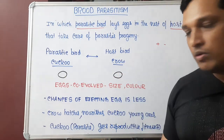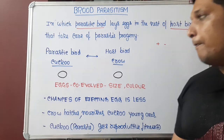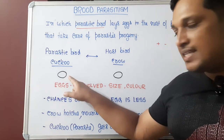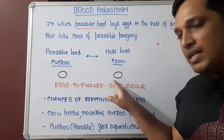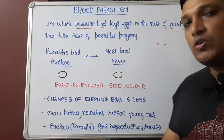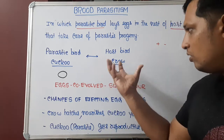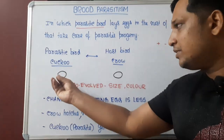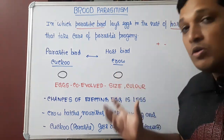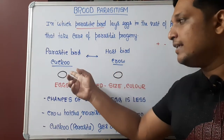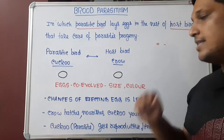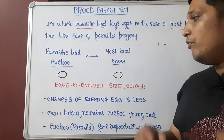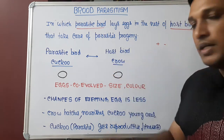Such brood parasitism is seen in the case of the cuckoo and crow. Here, the cuckoo is considered the parasitic bird because it has evolved its egg in such a way that the egg looks similar in size and color to the egg of the crow. The crow keeps its egg in the nest; the cuckoo observes such a nest and places its egg there. The crow most of the time won't be able to detect the cuckoo's egg because of the similar size and color, so the chance of ejection of the egg is very less.